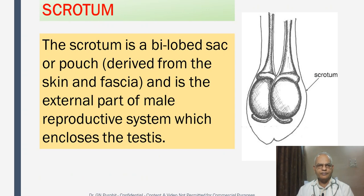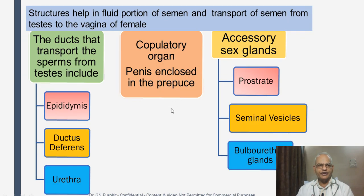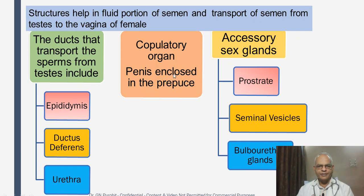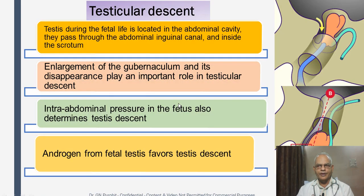The scrotum is a bilobed sac or pouch derived from the skin and fascia, and is the external part of the male reproductive system which encloses the testes. You can see the testes held outside the body in this pouch of skin. The ducts that transport the sperms from the testes include the epididymis, the ductus deferens, and the urethra. The accessory sex glands include the prostate, seminal vesicles, and the bulbourethral glands. The copulatory organ is the penis, which is enclosed in the prepuce.